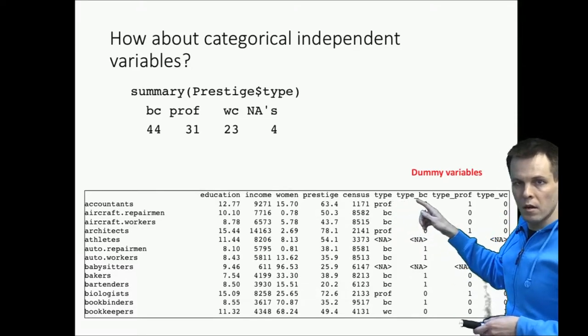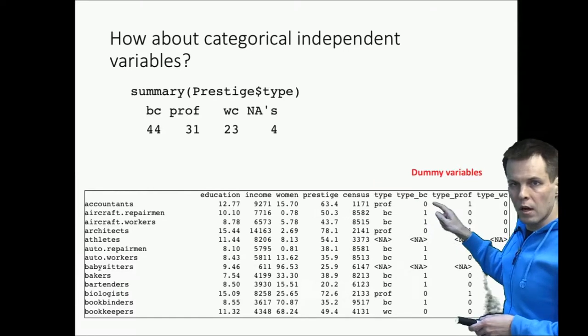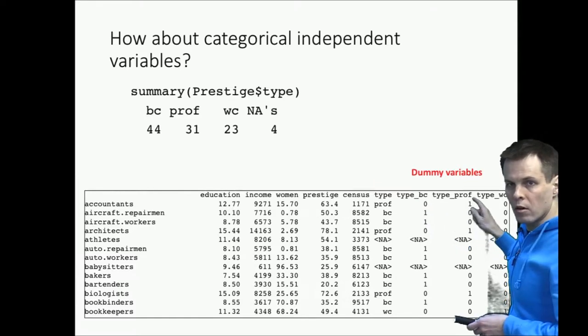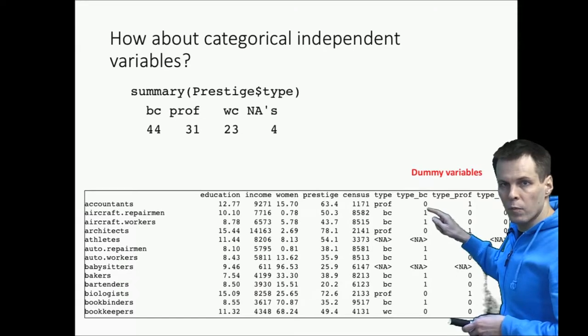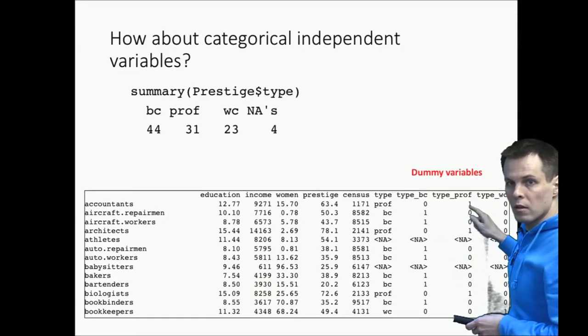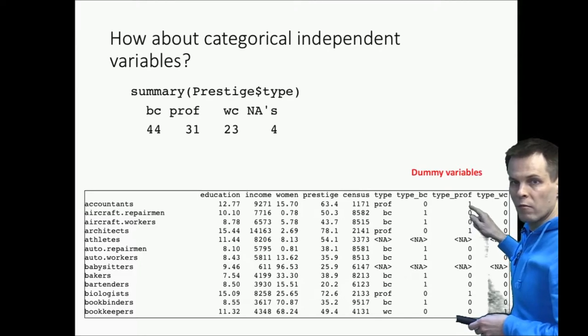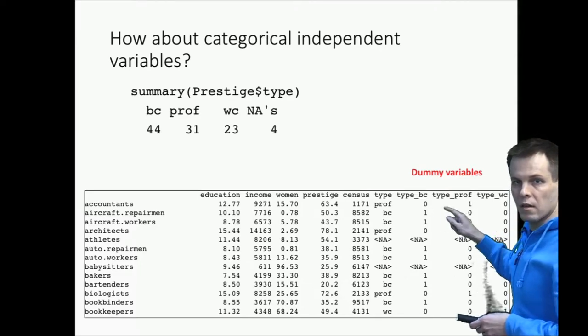Our dummy variables are type blue collar, type professional, and type white collar. The dummy indicates that this first occupation is a professional occupation. So type professional gets one, others get zeros.